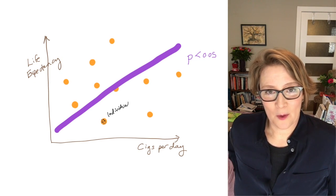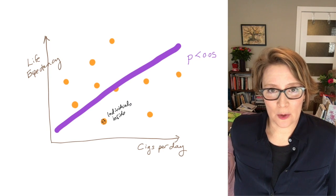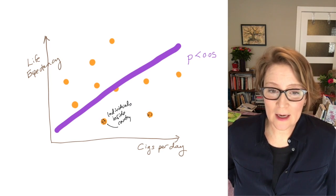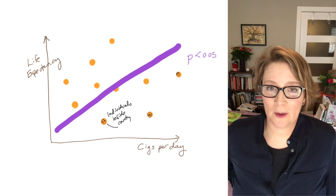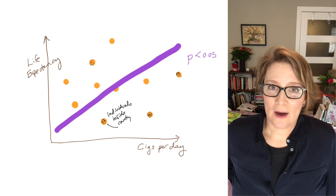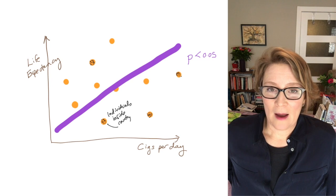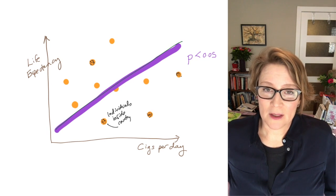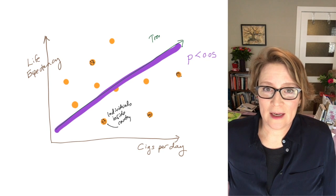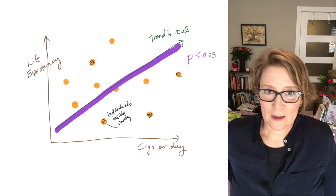The problem comes when we want to tell a story about individuals in those countries. This data is real data and it is truly a relationship that the higher per capita cigarette consumption is in the country, the higher life expectancy there is in that country. That data is correct. However...